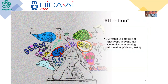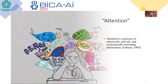First we need to know what attention is. Attention is a product of selectively, actively, and economically extracting information. That means that attention is always selecting the stimulus in the environment and selecting what is important for the object in that moment, using the least amount of energy.